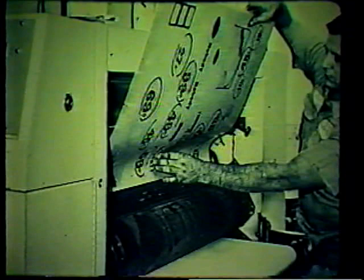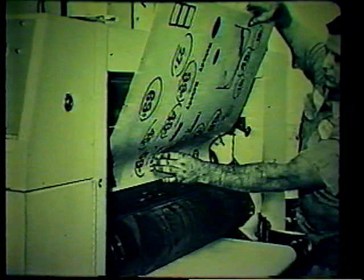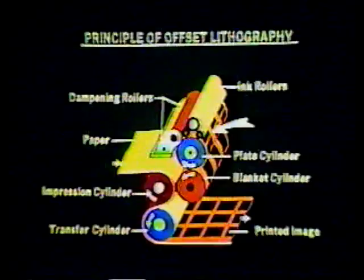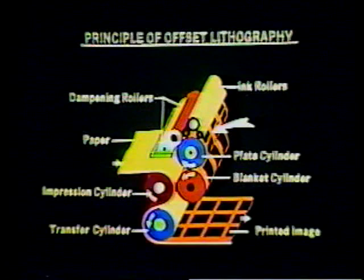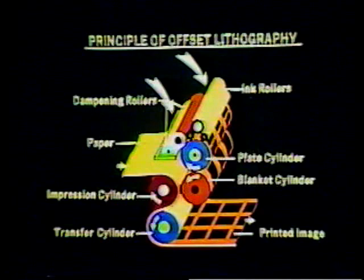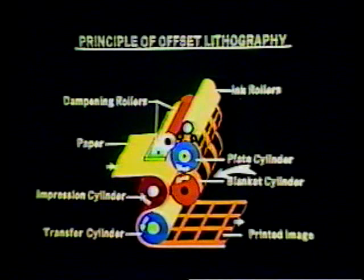Modern lithographic presses use thin steel, aluminum, or metalized paper plates easily wet with water. The grease pencil has been replaced by photography to define image areas. On the press, the plate is mounted on a cylinder which, as it rotates, comes into successive contact with rollers wet by a dampening solution and rollers wet by ink. The dampening solution wets the non-printing areas but does not adhere to the image area. The ink wets only the image areas, which are then transferred to the rubber blanket. The substrate picks up the image in the nip between the blanket and impression cylinders, and an impression is made.